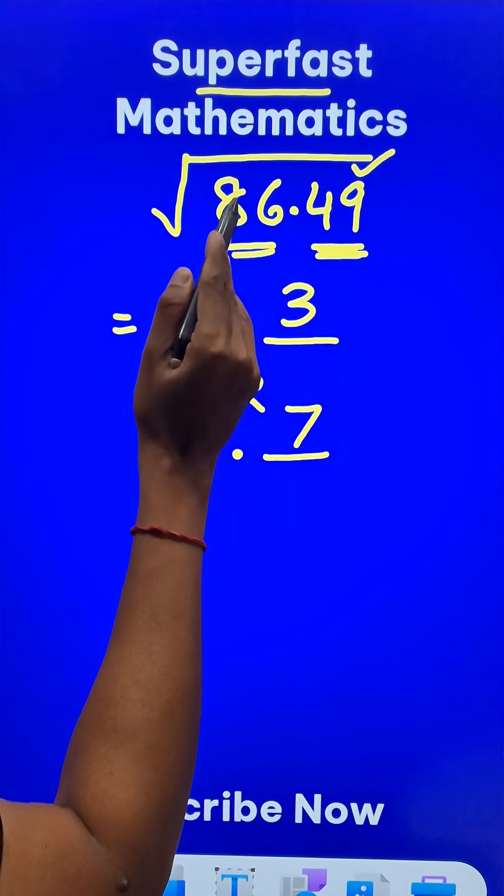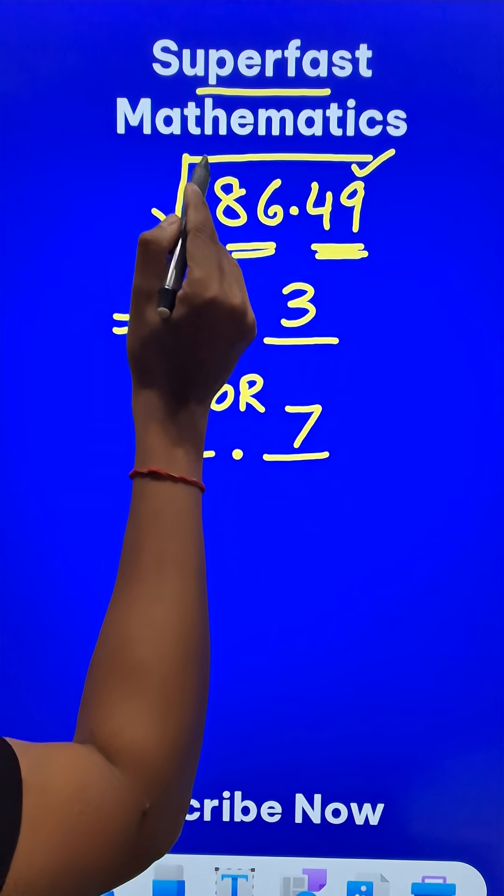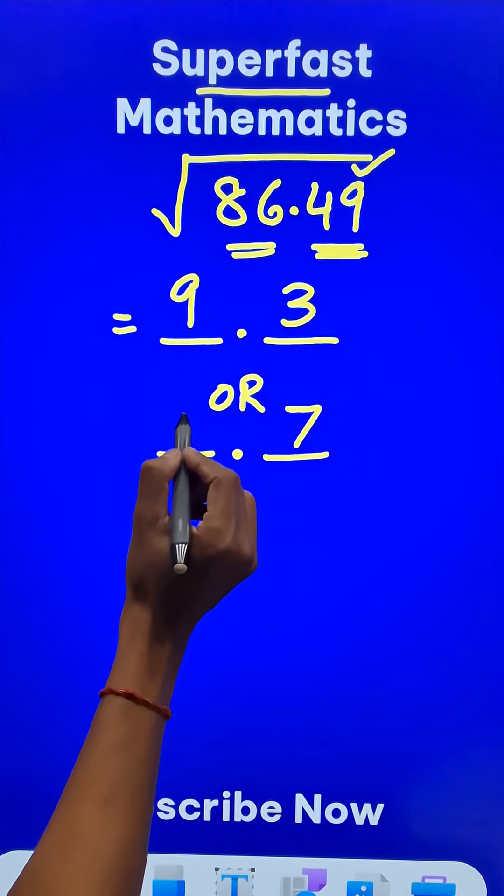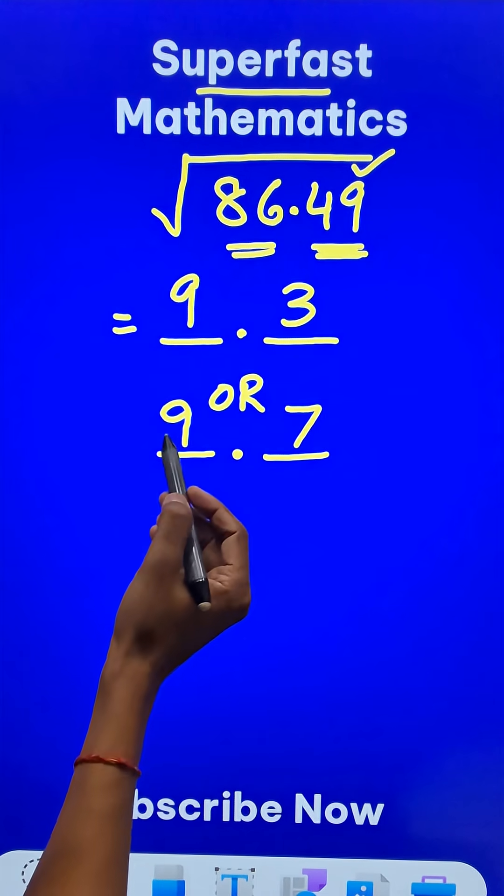Now 86, for 86 I have to check the number below 86 which is a perfect square. Like 81 is a perfect square and 81 is 9 square. So 9 occupies this place and therefore my answer is either 9.3 or 9.7.